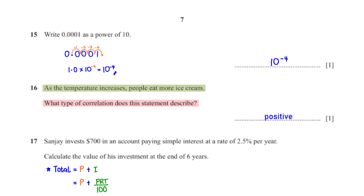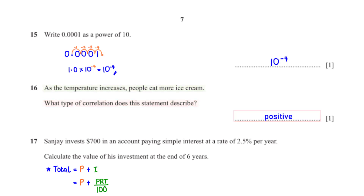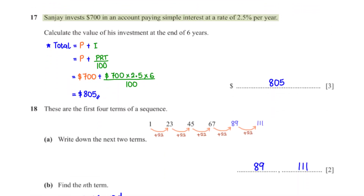As the temperature increases, people eat more ice cream. What type of correlation does this statement describe? Since the amount of ice cream eaten increases as temperature also increases, this is a positive correlation.